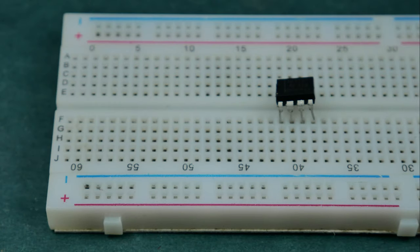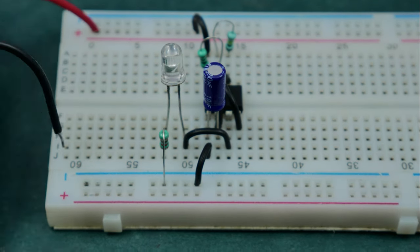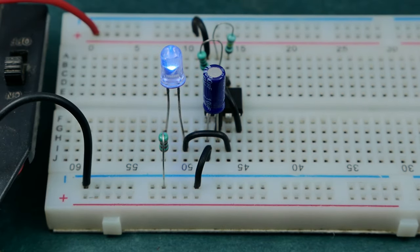Hi, welcome to Elonix. In this tutorial, I'll show you how to make a flashing or blinking LED circuit using a 555 timer IC in astable mode.